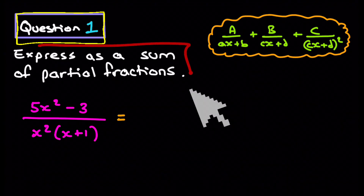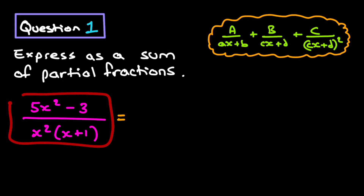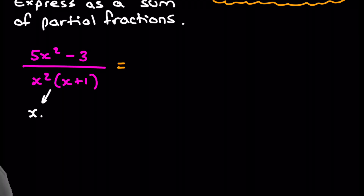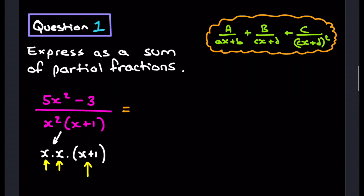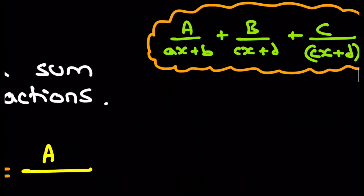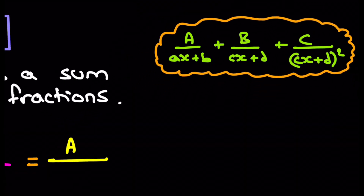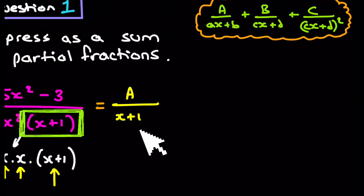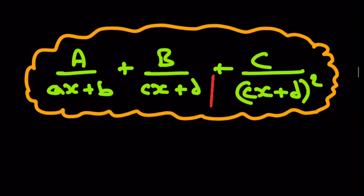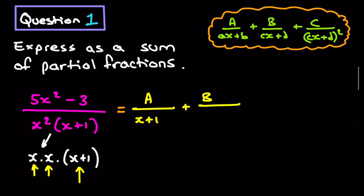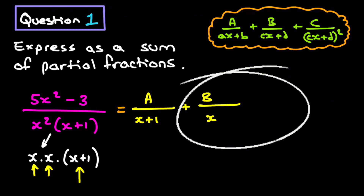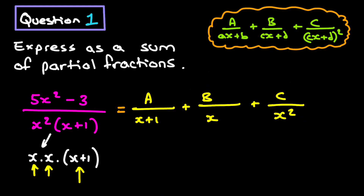Question 1: Express as a sum of partial fractions the following quotient. Let's take a closer look at the denominator — it's x times x times (x + 1). Think of this as one linear factor and one factor that is repeated twice. This is why we use a different format. We write A over the singular linear factor (x + 1), plus B over the repeated factor x, plus C over that same factor squared (x²). This is the setup we need for this style of question.